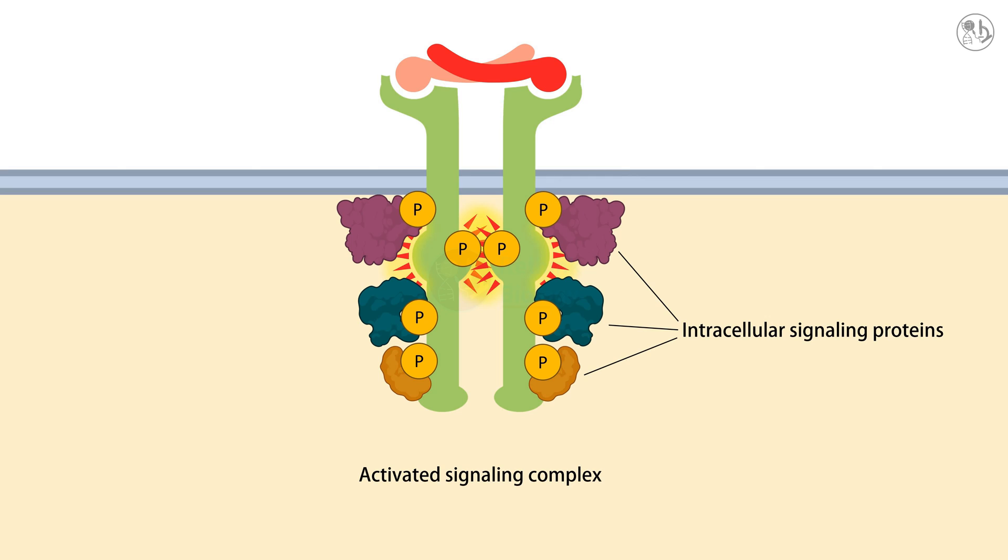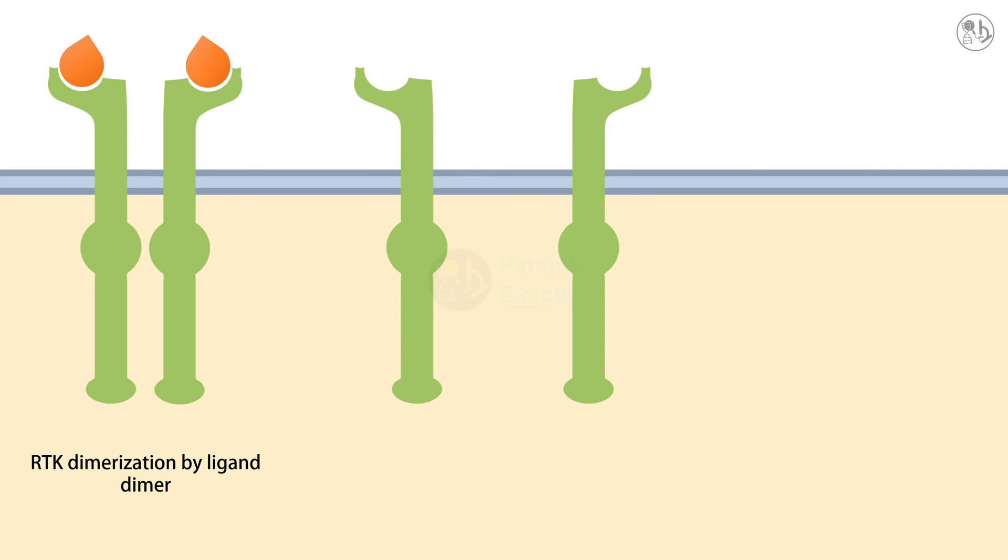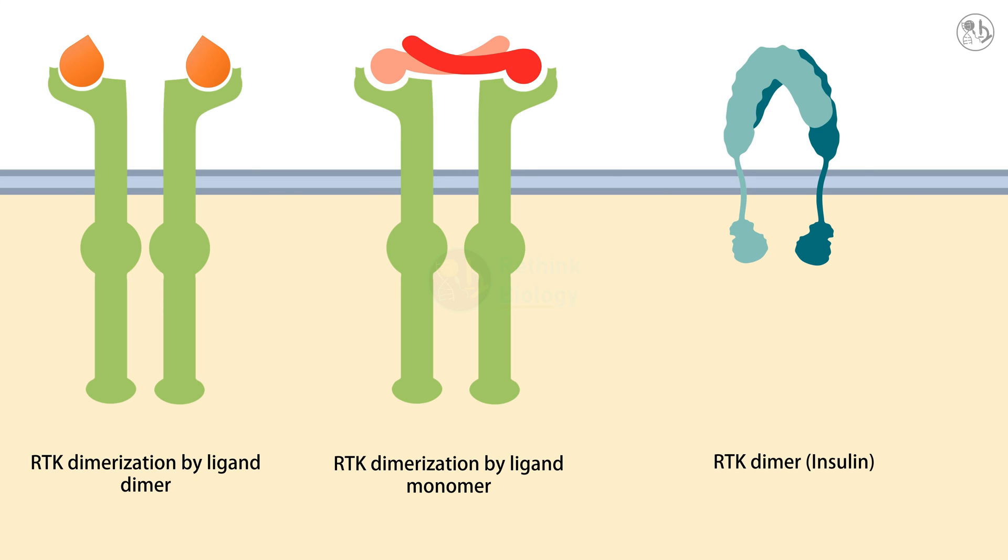The mechanism of dimerization varies among different RTKs. Some ligands are dimers themselves, meaning they have two identical parts, and they can bind to two RTKs at the same time. Other ligands are monomers, meaning single units, but they can still bring two RTKs together by binding to both of them. Some RTKs are always dimers even without ligand, but they need ligand binding to change their shape and activate their kinase domains.